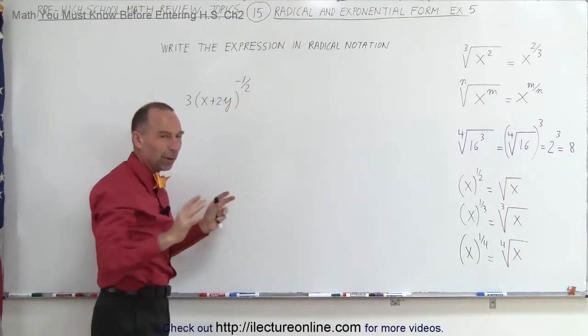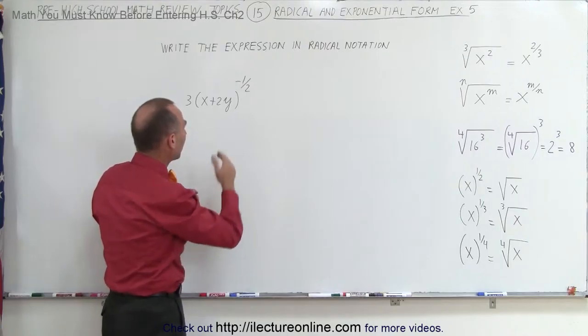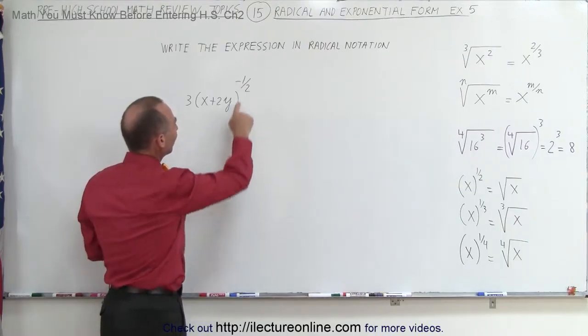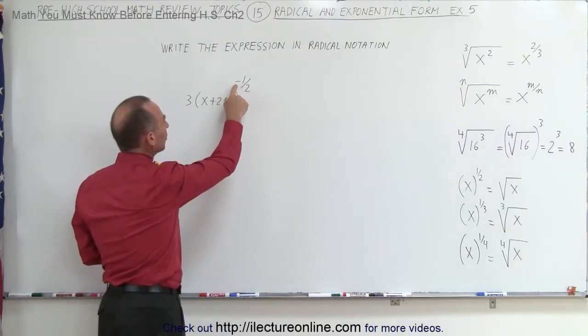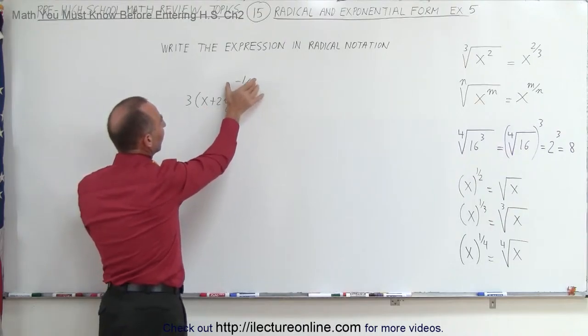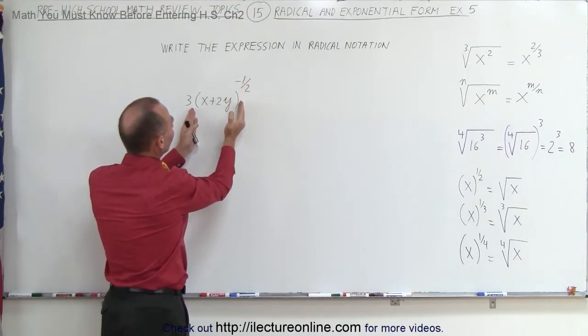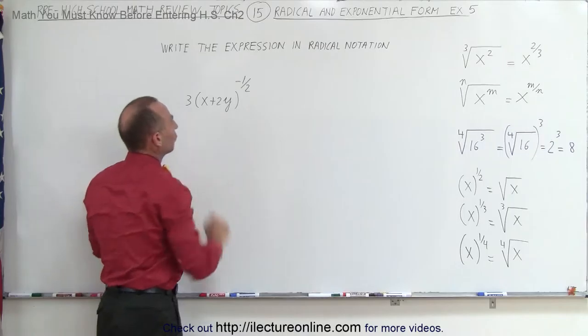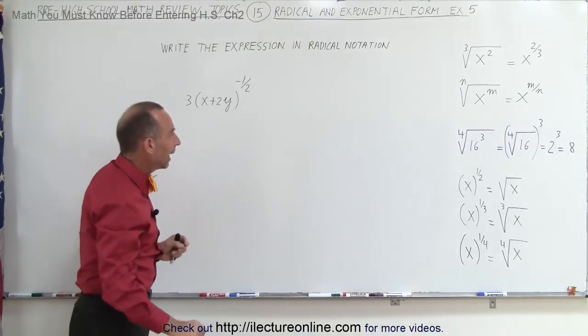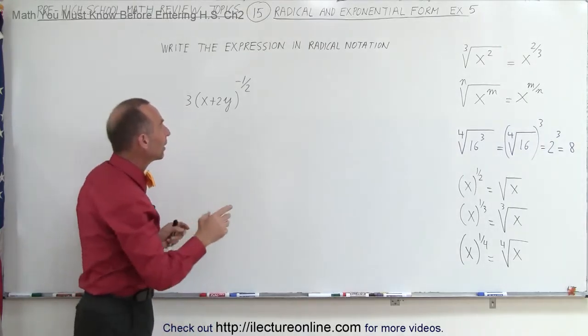This means we'll need to take the square root somewhere. We have a negative sign - we'll deal with that in a moment. But also realize that this exponent only applies to what's inside the parentheses, not to the number 3. From previous videos, we know that whenever we have a negative exponent...